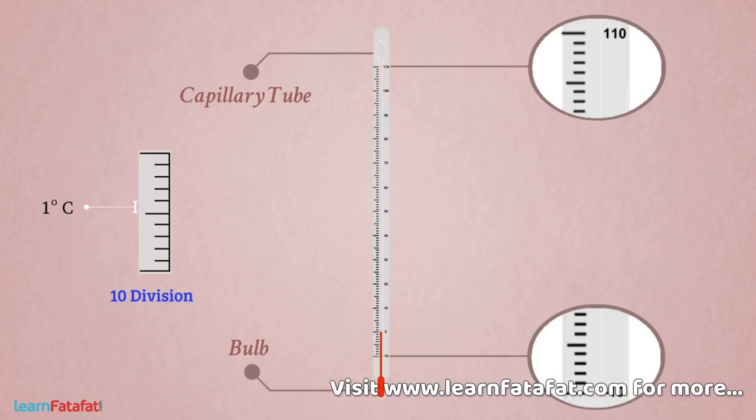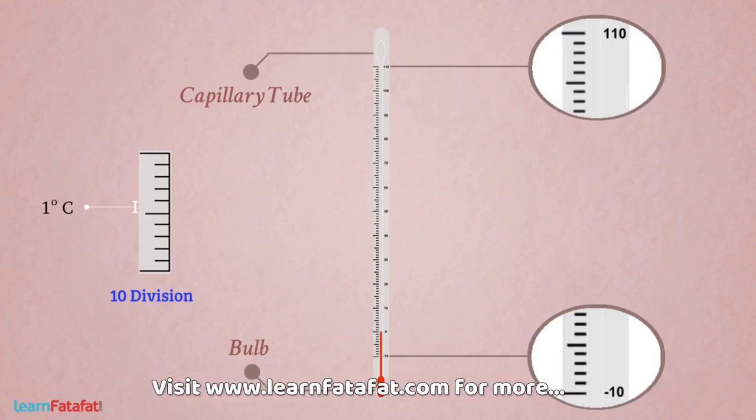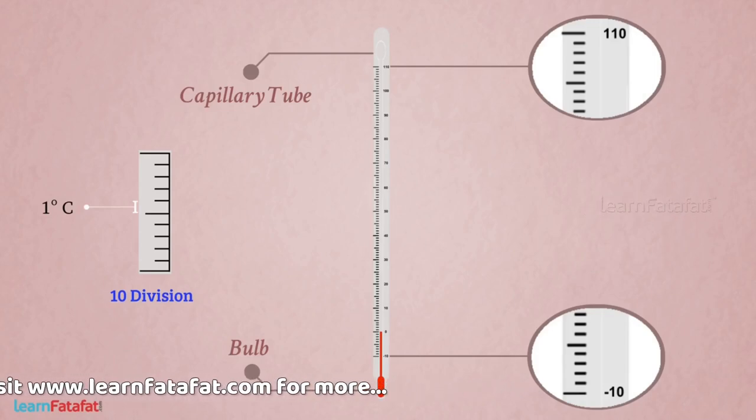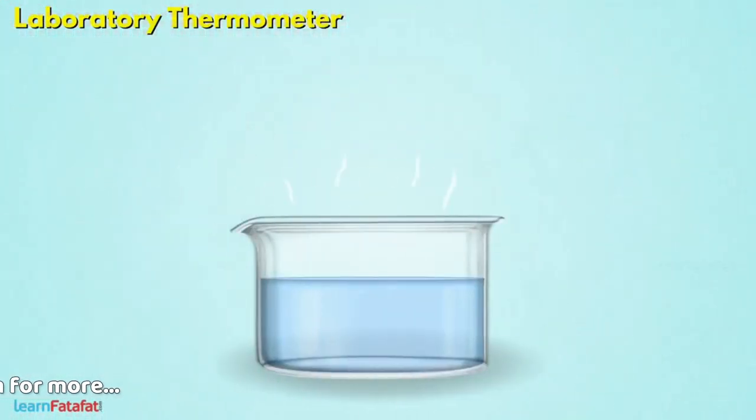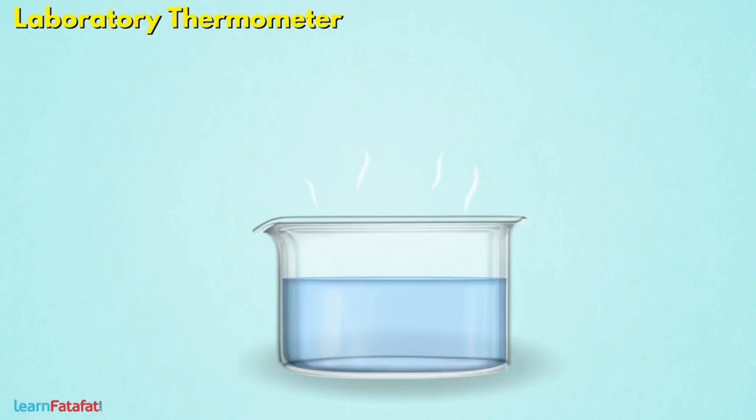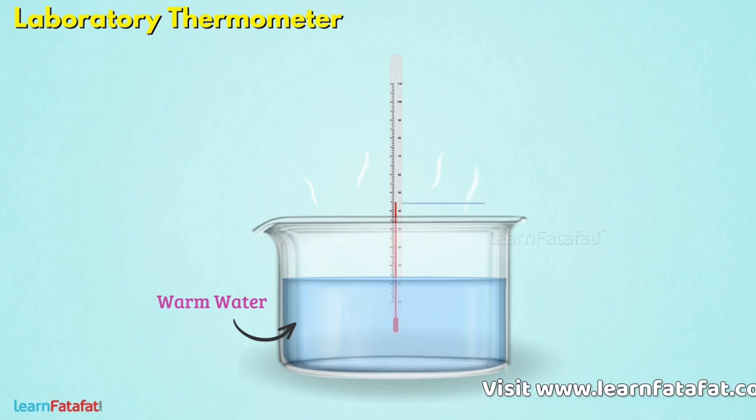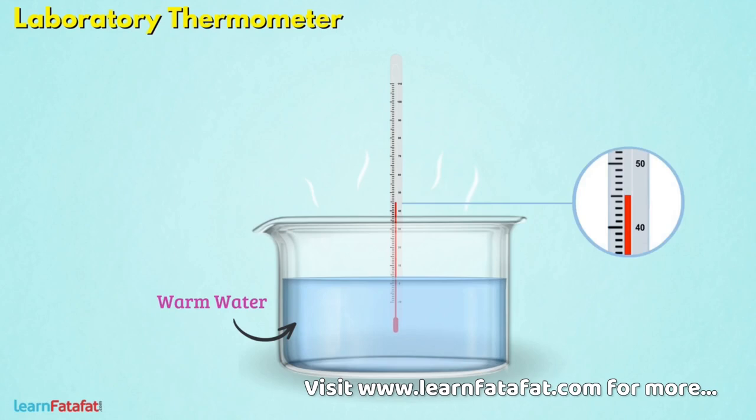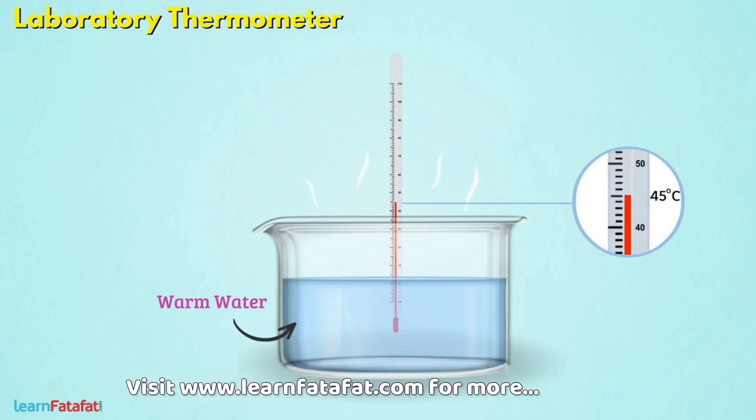While measuring the temperature, we should follow some practices to get correct reading. Take the sample of which we want to measure the temperature. Here, we will take some warm water in a beaker. Now, place the thermometer vertically such that the bulb remains immersed in water but does not touch the beaker. When the expansion of mercury stops, notice the reading in the thermometer. Here, it is 45 degree Celsius.